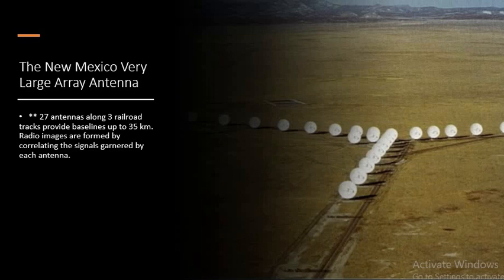Here an example is shown for you for arrangement of antennas. The figure shows a large array antenna with 27 antennas along three radial road tracks providing a baseline up to 35 kilometers, which is located in New Mexico.